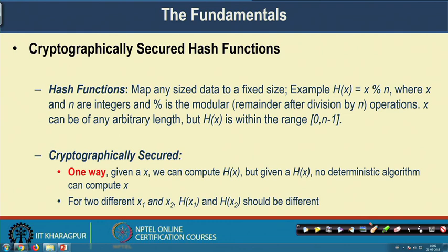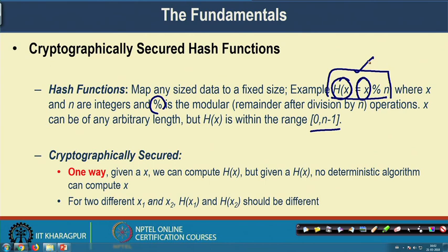A hash function is a function that maps any size data to a fixed size. For example, if we define a hash function like h(x) = x modulo n, where x and n are integers and modulo is the modular operation — the remainder of division by n — then whatever be the value of x, the value of h(x) will be in between 0 and n minus 1.